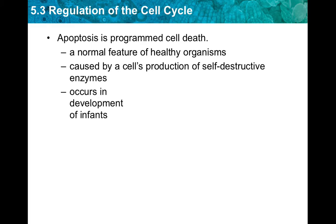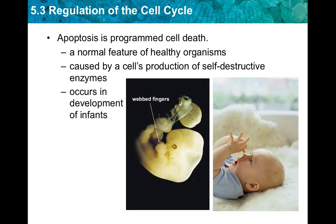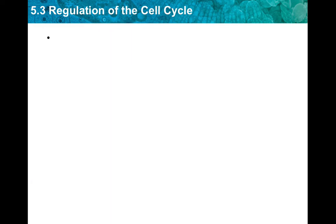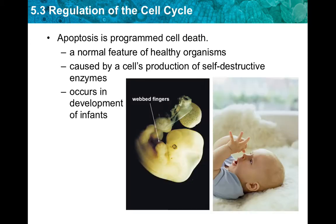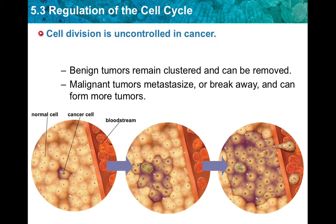Apoptosis occurs in the development of infants. Here we can see a baby in the embryo having webbed fingers and webbed toes. As apoptosis occurred, we can see that the baby, once born, now has separate fingers that are no longer webbed.